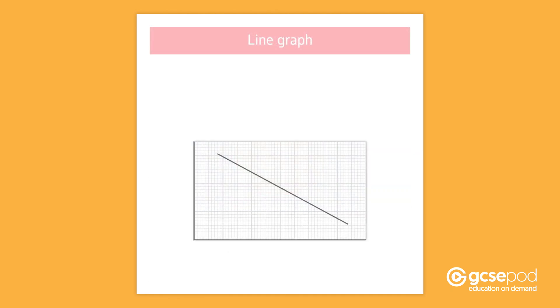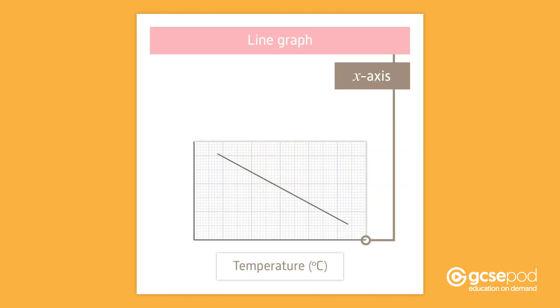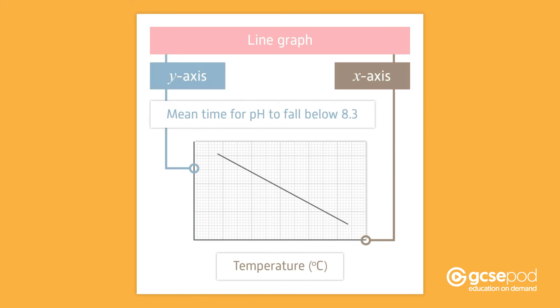The data should be shown as a line graph, with temperature in degrees Celsius on the x-axis and the mean time for the pH to fall below 8.3 on the y-axis.